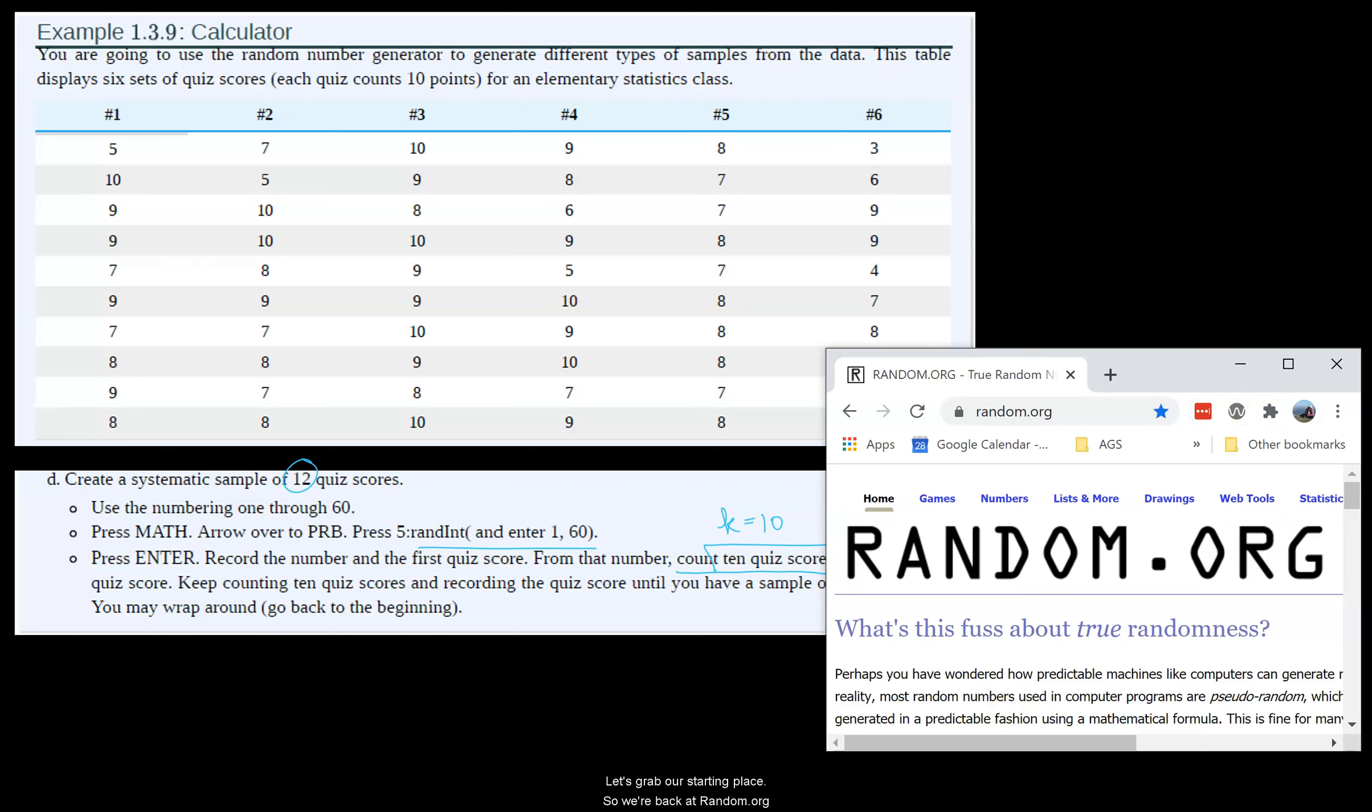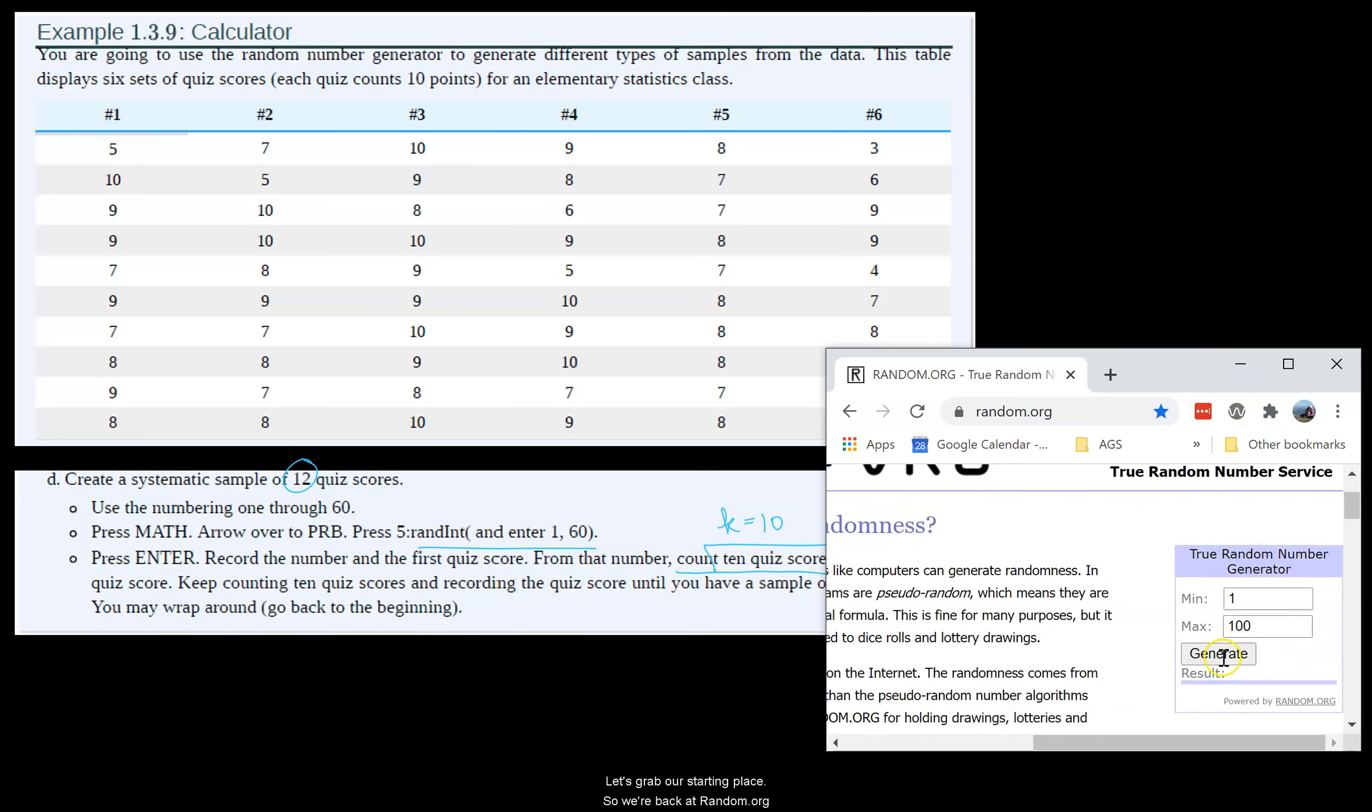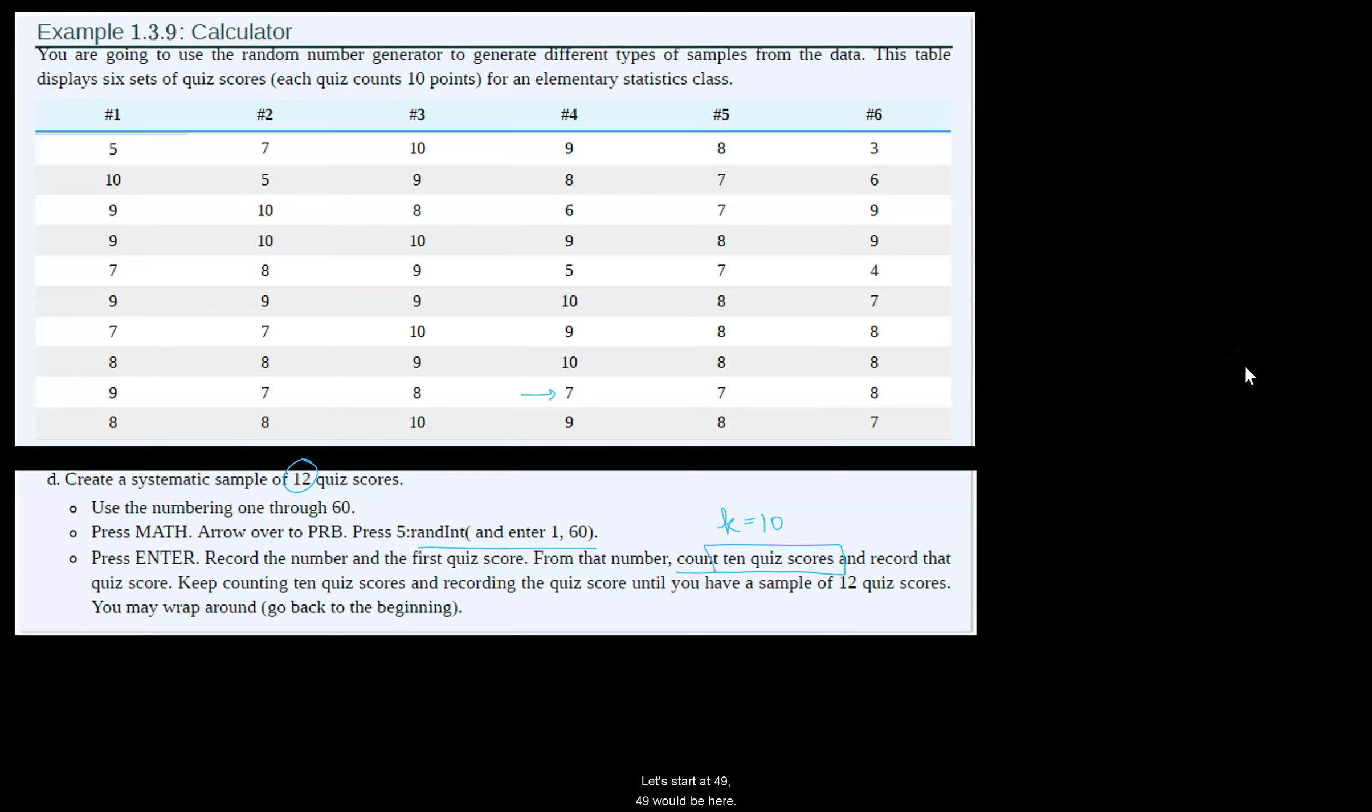Let's grab our starting place. We're back at random.org to our true random number generator. We need a starting place. Let's start at 49. So 49 would be here.